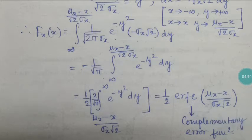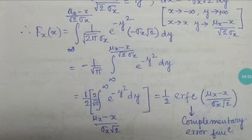Shuffling the limits introduces a factor of 2, and taking half of one side gives: F_x(x) = (1/2) erfc((μ_x - x) / (σ_x √2)). This particular function is called the complementary error function, erfc. It is defined as erfc((μ_x - x) / (σ_x √2)) and is obtained by integrating the Gaussian kernel, yielding the erfc function.